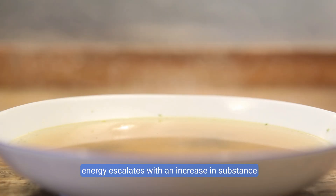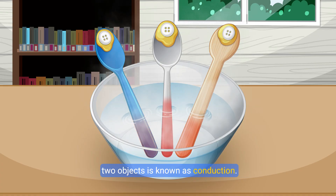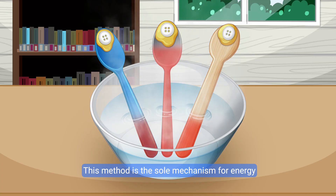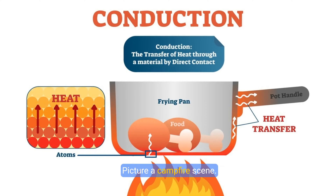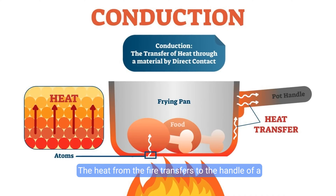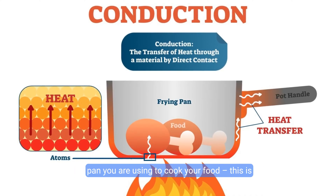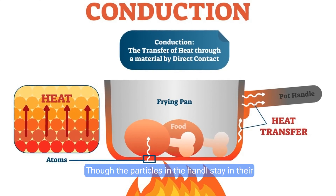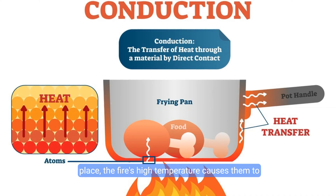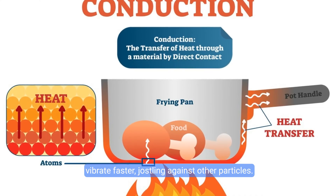Thermal energy escalates with an increase in substance amount. The transfer of heat through direct contact between two objects is known as conduction — this is the sole mechanism for energy transfer in solids. Picture a campfire scene: the heat from the fire transfers to the handle of a pan you are using to cook your food. Though the particles in the handle stay in their place, the fire's high temperature causes them to vibrate faster, jostling against other particles.